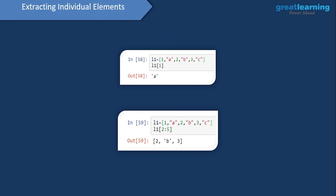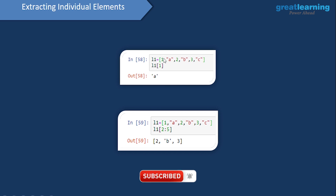Just as we extracted individual elements from a tuple, we can extract individual elements from a list as well using the same process. All of these elements are indexed starting from zero — it is very important to keep that in mind. The indexing of a list, or whatever data structure you're working with in Python, starts from zero. So if I want to extract the second element, its index is one, and passing L one of one extracts that particular element.